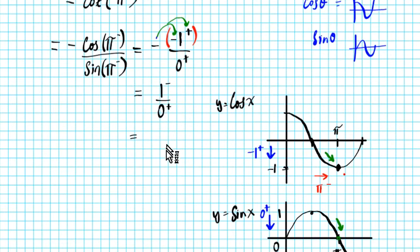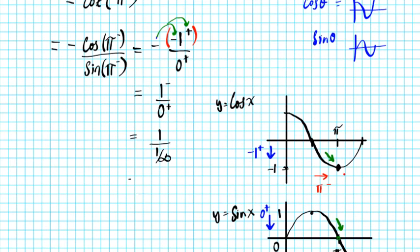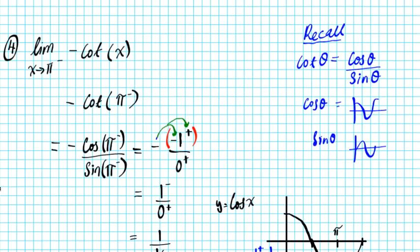Zero from the right, using our knowledge of infinitesimals, is one over infinity. We flip and multiply: one times infinity over one, and the final answer is infinity.